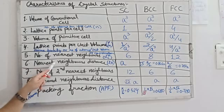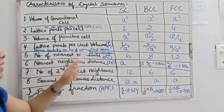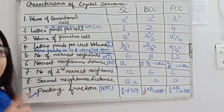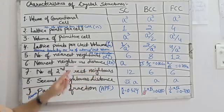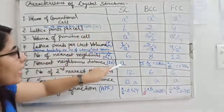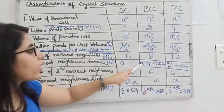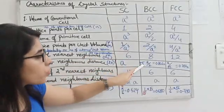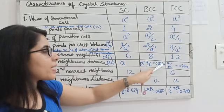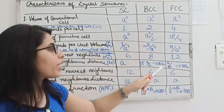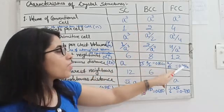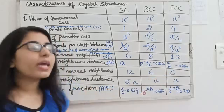The next property is nearest neighbor distance, denoted by 2r, where r is the radius of the atom. The nearest neighbor distance for simple cubic is a, for body centered cubic is √3a/2 which equals 0.866a, and for face centered cubic is a/√2 which equals 0.707a.